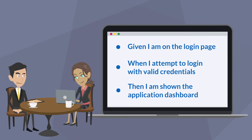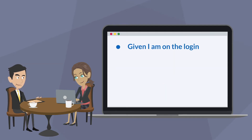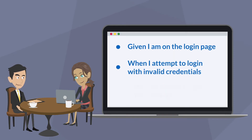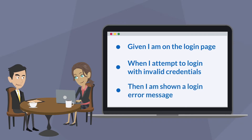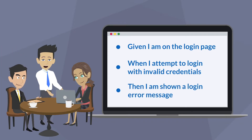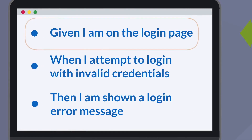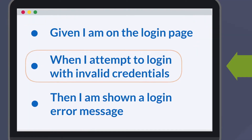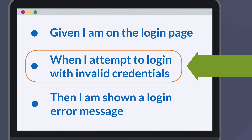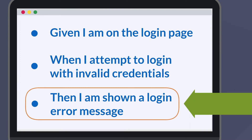And another scenario that says: given I am on the login page, when I attempt to login with invalid credentials, then I am shown a login error message. These examples are written in English, but they are still very structured. The given portion tells the starting condition, the when line tells what you actually do, and the then tells what results are expected.